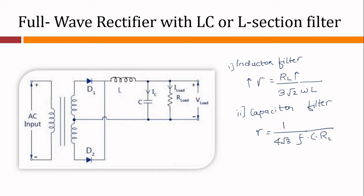Here is the circuit diagram. In case of choke input filter, it consists of choke L connected in series with the rectifier — the rectifier part is D1 and D2. The output is fed to the choke and we have a capacitor C connected across the load resistance R load. This is also referred to as L section filter because the inductor and capacitor are connected as an inverted L. Only one LC section is shown here, but several identical sections are often employed to improve the smoothing action — that is referred to as multiple LC filter.